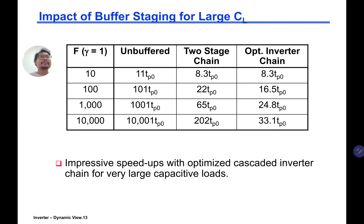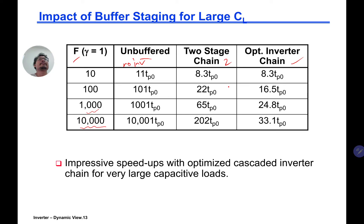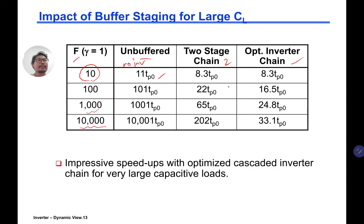Now let's see the impact of buffer staging for large CL. If big F equals 10,000 or 1,000 — which is quite practical in a big design where the output drives a large number of gates — what's the difference between unbuffered (no inverters), a two-inverter chain, and an optimized inverter chain using the 0.8·ln(F) formula?